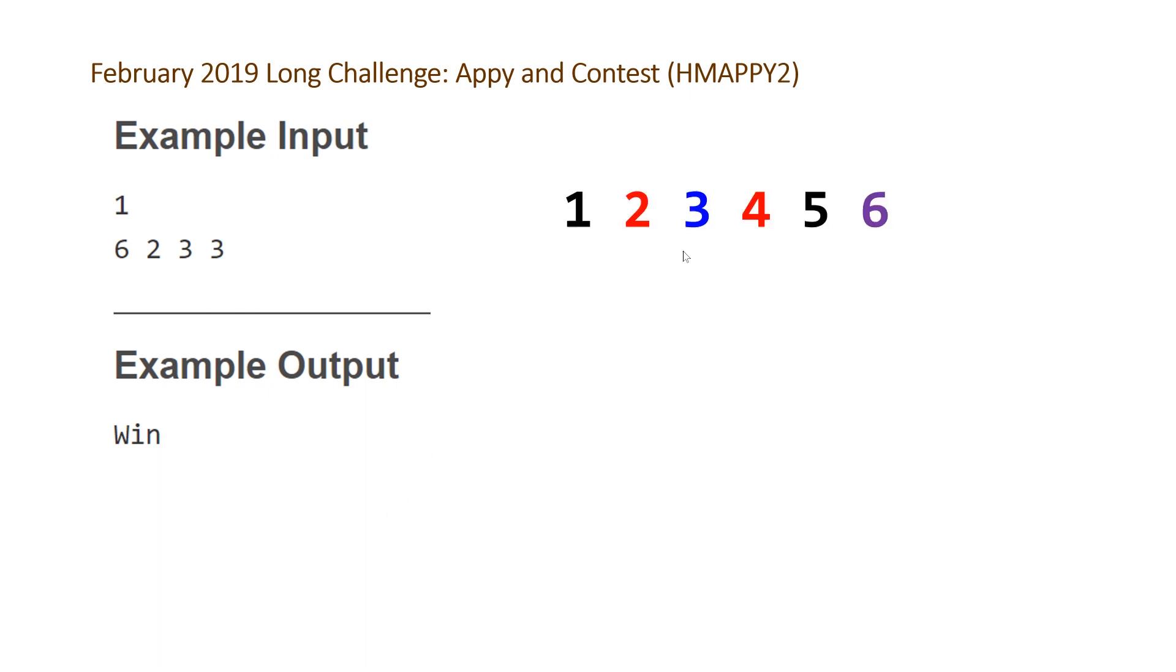And if we take a look at why this is, if we number our problems 1, 2, 3, 4, 5, 6, you can see that in red are the problems that are divisible by 2, that I believe Appy was going to solve. The blue numbers, 3 here, are going to be the problems that Chef's going to solve, because they're divisible by B, 3. And then the purple number here is the problems that are divisible by both A and B, which are not going to get done.